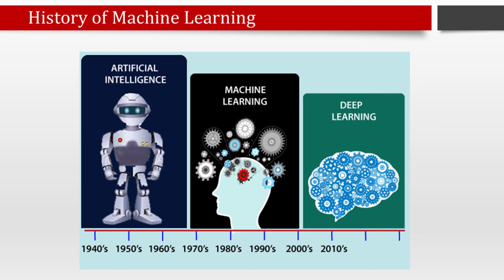In 1959, machine learning moved from theory to reality — the first neural network was applied to a real-world problem to remove echoes over phone lines using adaptive learning. In the 21st century, neural network research was given a new name: deep learning, which has become one of the most trending technologies. In 2014, DeepFace was introduced — a deep neural network created by Facebook. In 2017, the Alphabet team built an intelligent system that learned to detect online trolling by reading millions of comments from different websites.